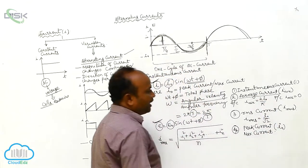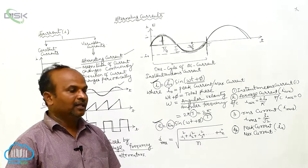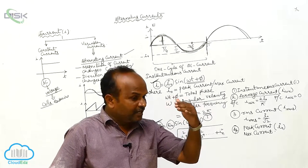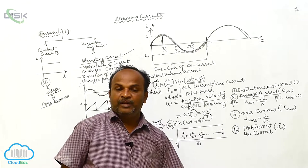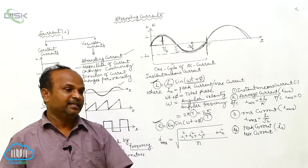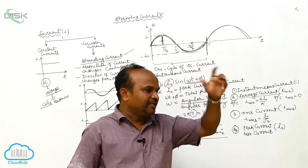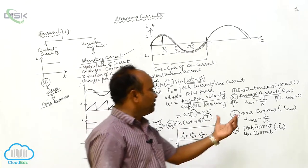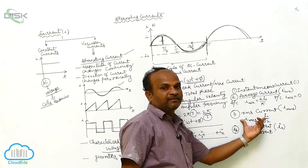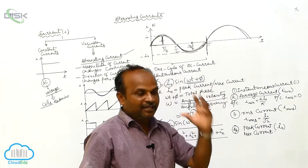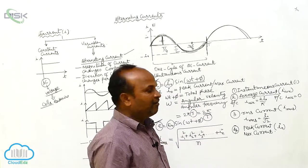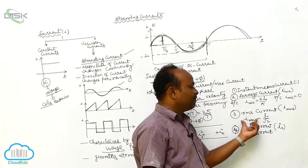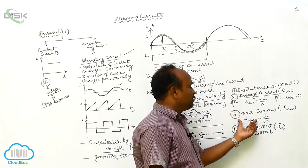What is the importance of RMS current? Voltmeters and ammeters are used to measure current and voltage. To measure DC current and DC voltage, a DC ammeter is used. To measure AC currents, an AC voltmeter and AC ammeter are used. By using the AC ammeter and AC voltmeter, they will give you the RMS value.